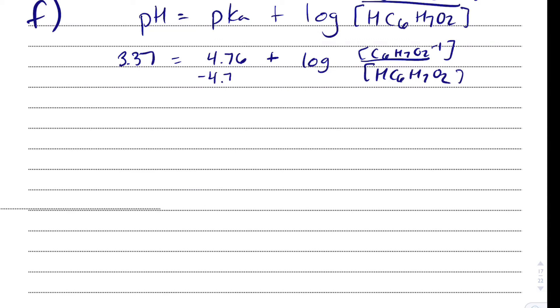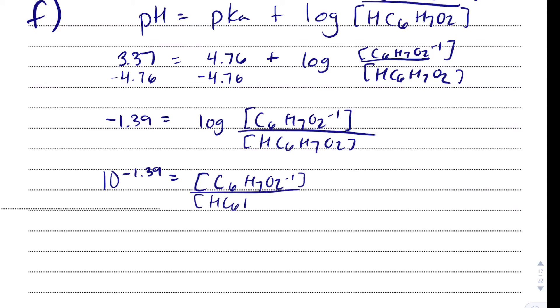So I'm going to minus 4.76 minus 4.76, and I'm going to get negative 1.39 equals the log of C6H7O2 minus 1 divided by HC6H7O2. Inverse of log is 10 to whatever is on the other side. So 10 to the minus 1.39 equals this fraction, C6H7O2 minus 1 over HC6H7O2, and that equals 0.0407. So HC6H7O2, which is my denominator, must be larger.